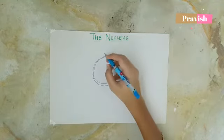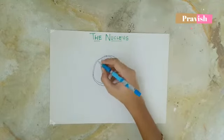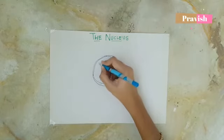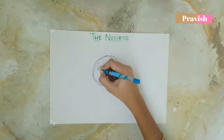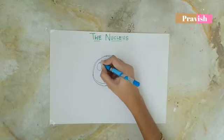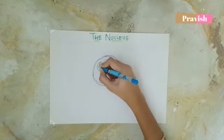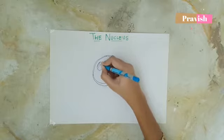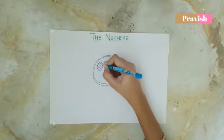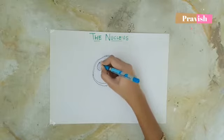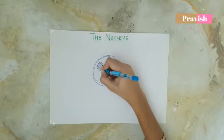This is the nucleus. The nucleus has another small body called the nucleolus. This is a solid body that is present inside the nucleus.